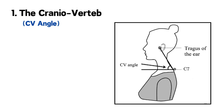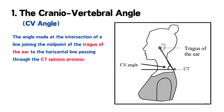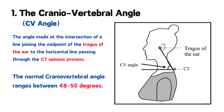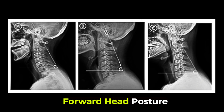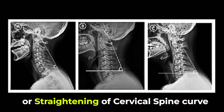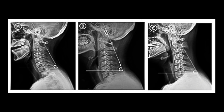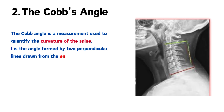First is the craniovertebral angle, or the CV angle. This is an angle made at the line joining the tragus of the ear and the C7 spinous process. This angle normally ranges between 48 to 50 degrees. An increase in CV angle very clearly suggests forward head posture or straightening of the cervical spine curve, as seen in these three different x-ray images.